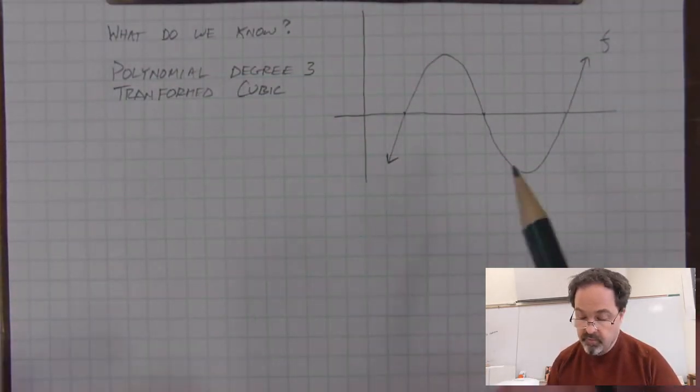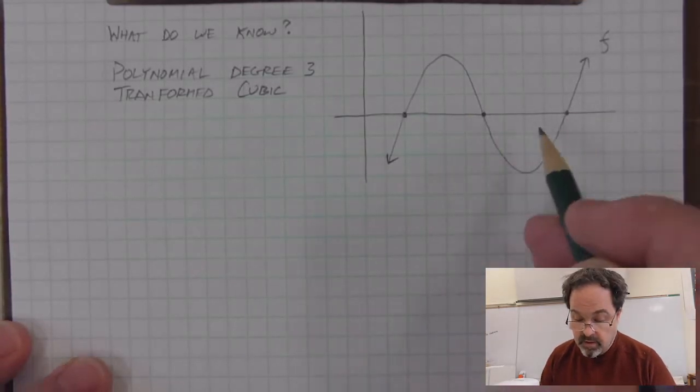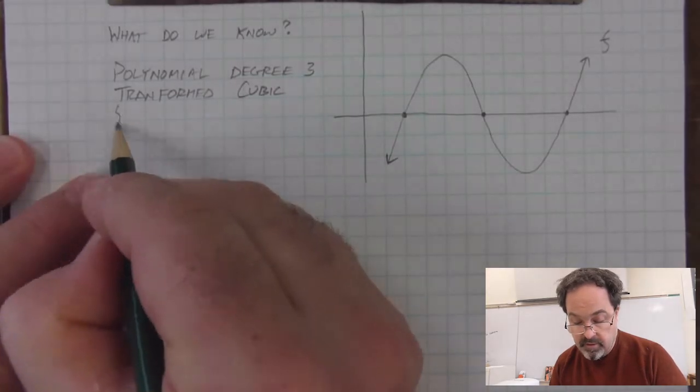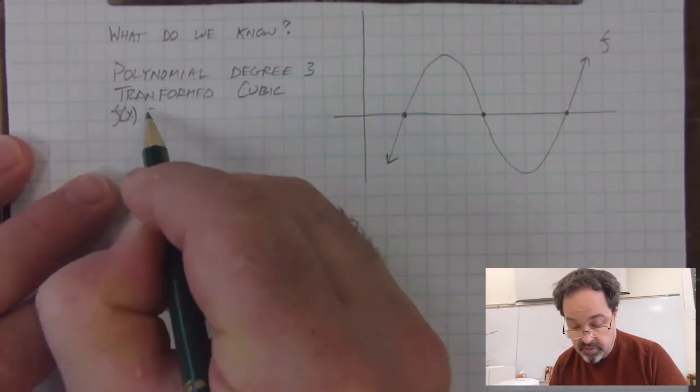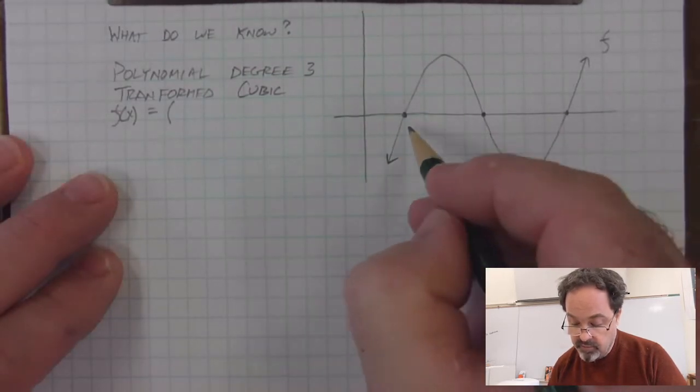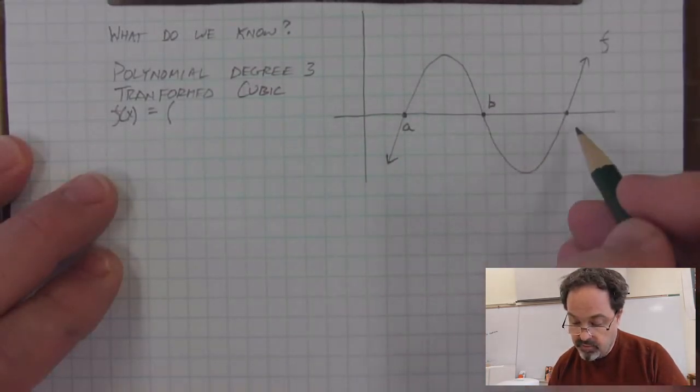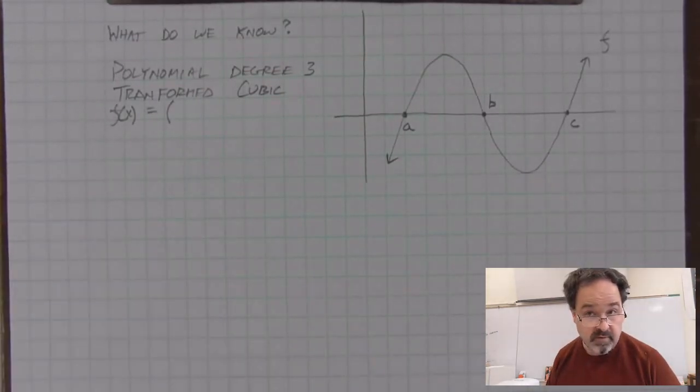We can observe that there are 3 x-intercepts. We could write the expression in factored form by identifying these locations, and in general we're going to call the locations, the x values of these intercepts, a, b, and c.